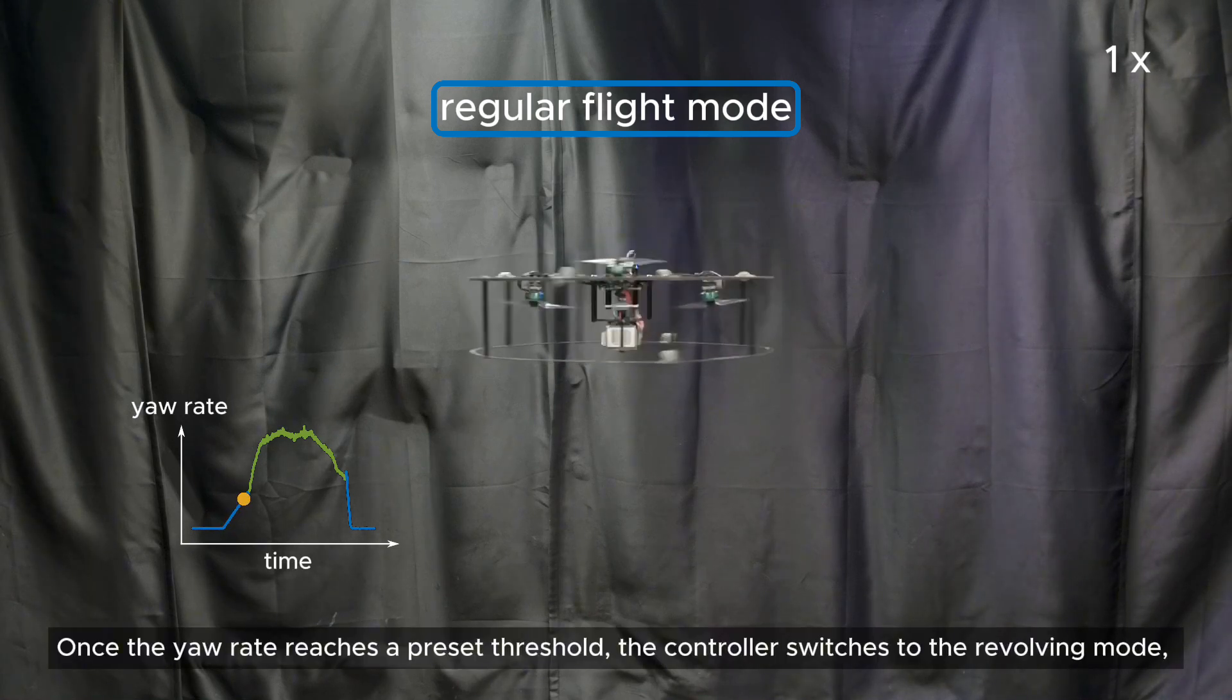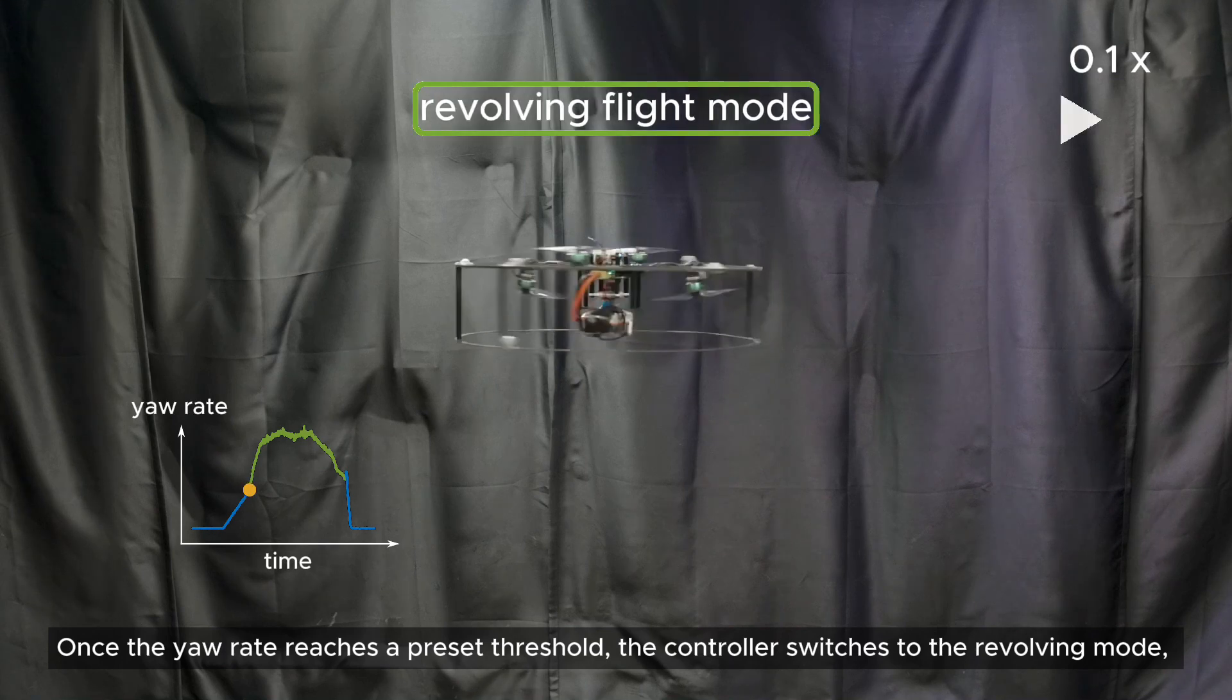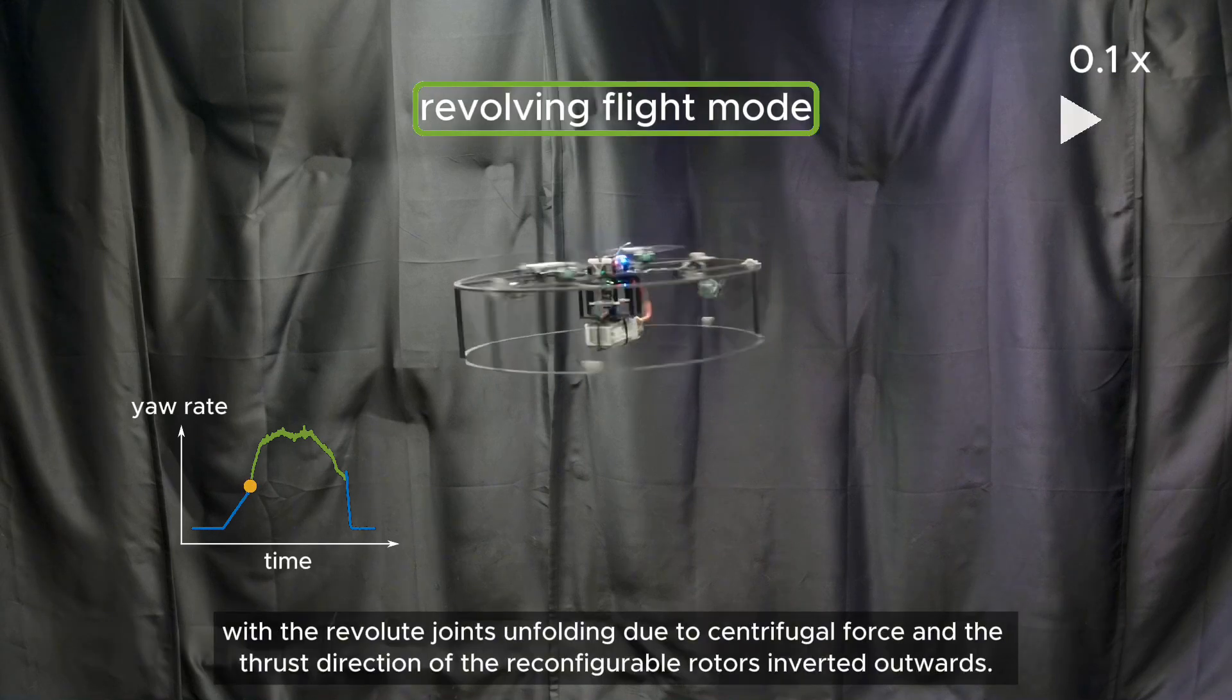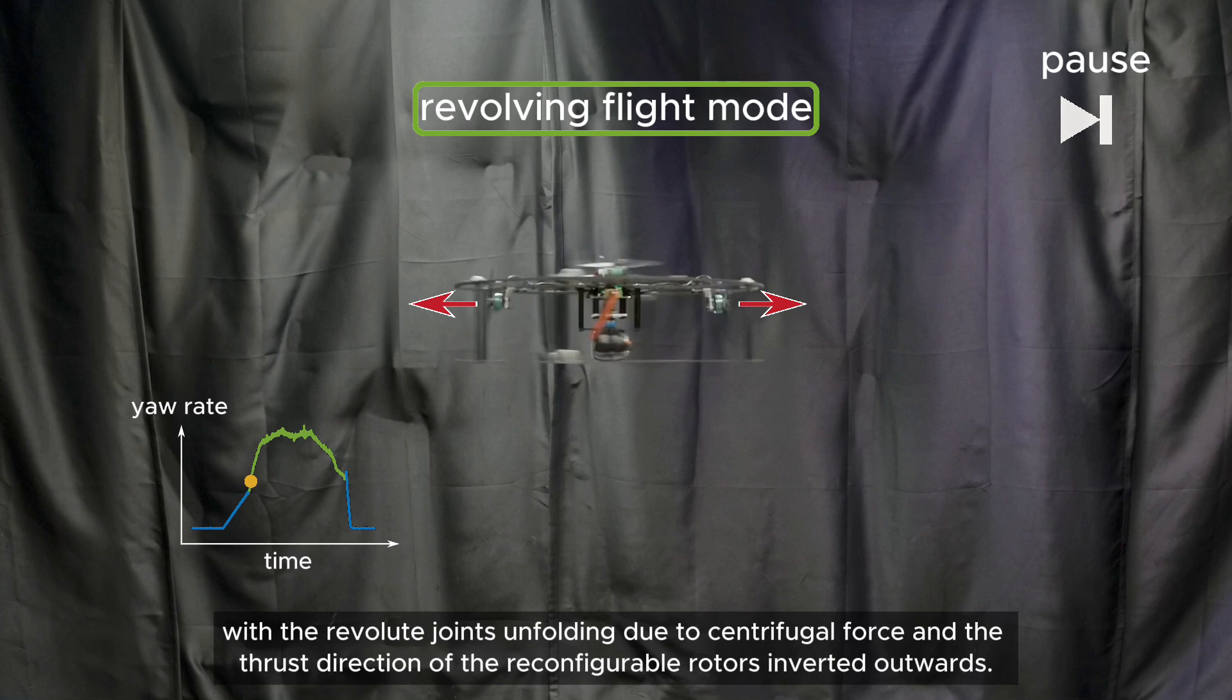Once the yaw rate reaches a preset threshold, the controller switches to the revolving mode, with the revolute joints unfolding due to centrifugal force and the thrust direction of the reconfigurable rotors inverted outwards.